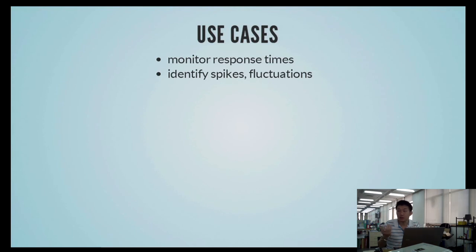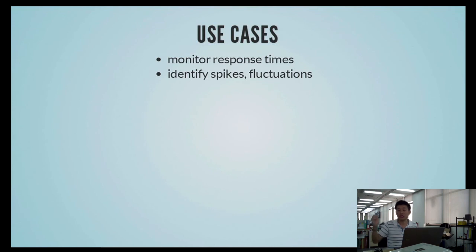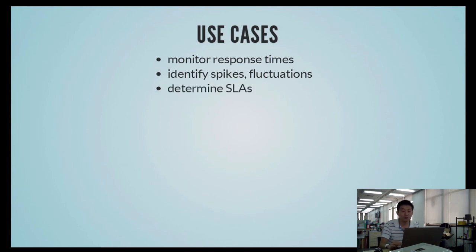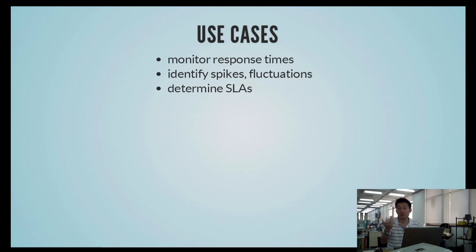We can identify spikes or fluctuations. With this tool, I actually saw that within a recorded time period we had a request that lasted for 90 seconds, even though the client had timed out after 10. Companies nowadays are obsessed with SLAs and latency. We know our 95th percentile is around two to two and a half seconds, for example.